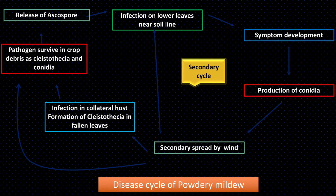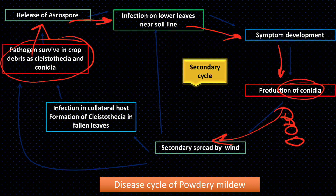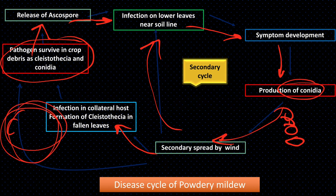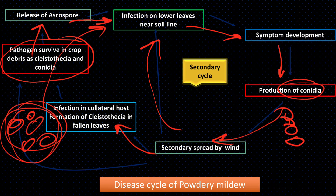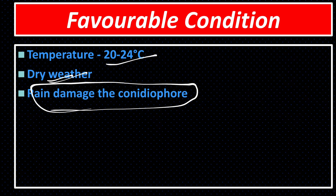The pathogen survives in crop debris as cleistothecia. From cleistothecia, ascospores are released. After leaf infection, conidia are produced in chains and spread by wind to other plant leaves, causing further infection. At the end of the crop season, the pathogen forms cleistothecia containing asci and ascospores, which survive and act as primary inoculum in the next season. Favorable temperature for Blumeria graminis is 20–24°C with dry weather. Rain damages the conidia.